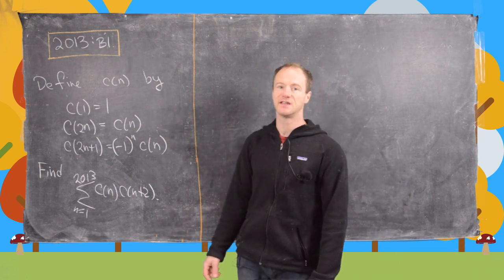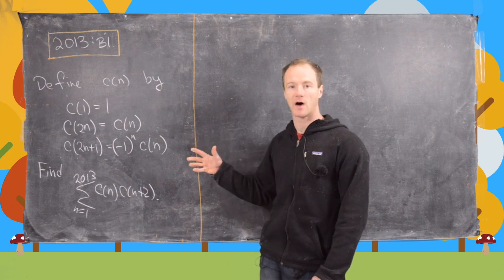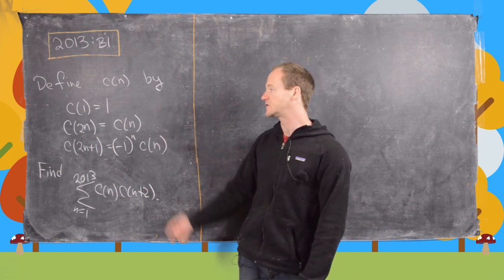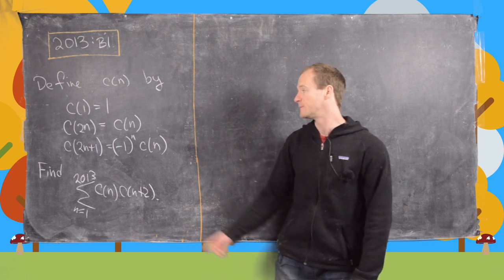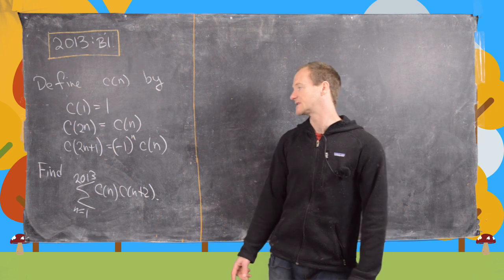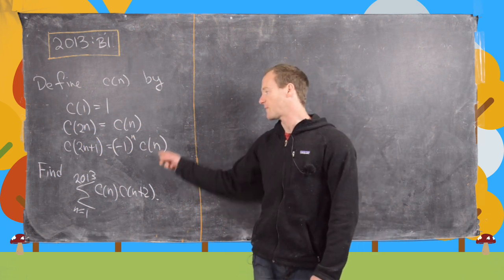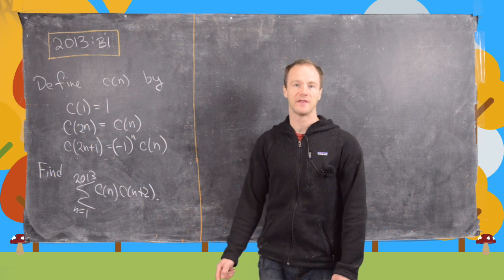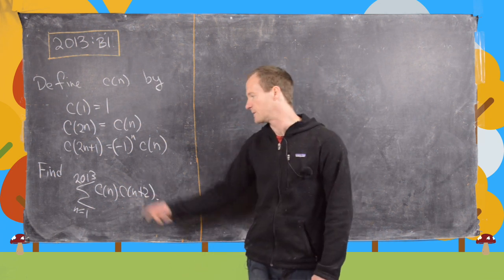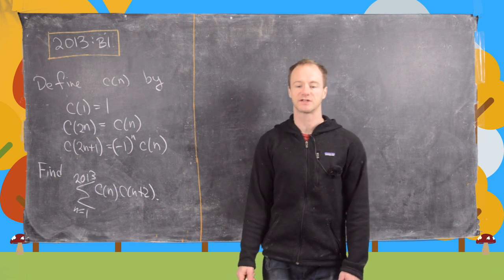We want to define these numbers c_n by the following recursion. So we have c(1) equals 1, c(2n) equals c_n, and then c(2n+1) equals (-1)^n times c_n. And then our goal is to find the following sum: the sum from n equals 1 to 2013 of c_n times c_(n+2).